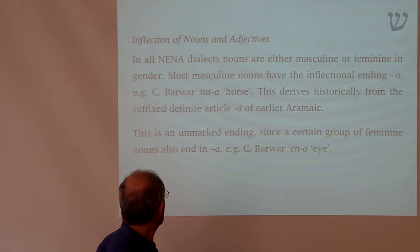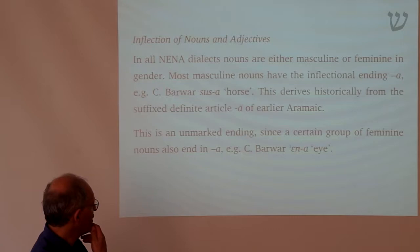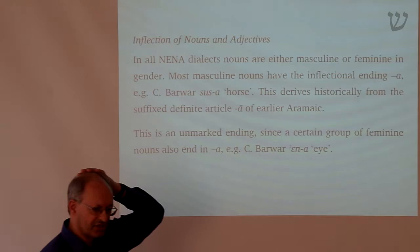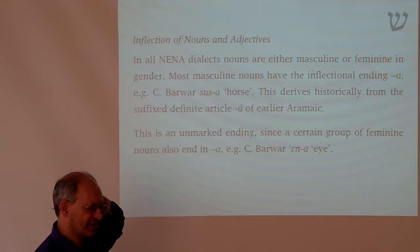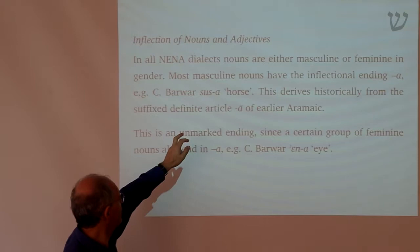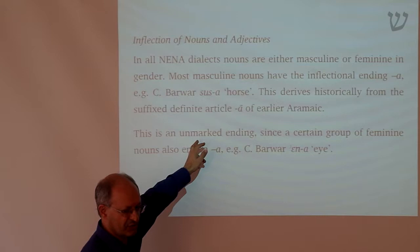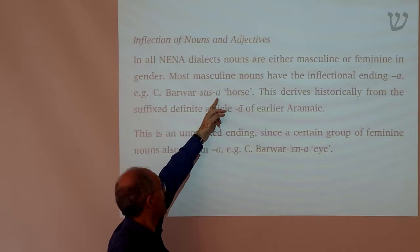Now let's look at nouns — the form of nouns. The first thing about nouns in NENA dialects is that you remember in earlier Aramaic there's an ending on nouns expressing the definite article — 'malca', the king. By the time you get to NENA, this ending has become completely fixed — it's no longer functional as a definite article. It is an obligatory part of a noun, really what we call a nominal inflection indicating that the word is a noun. So the word 'susa' in Barawa means 'horse', and the 'a' doesn't mean specifically 'the horse' — it simply means 'horse'.